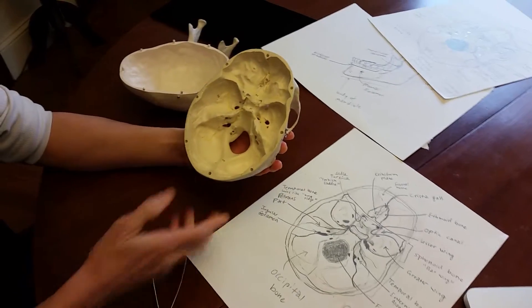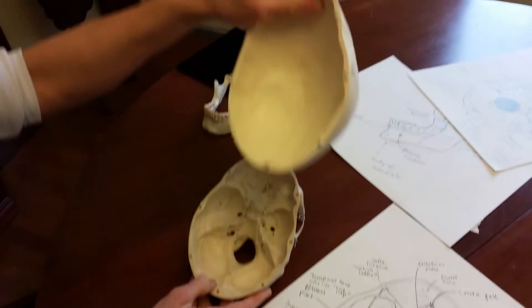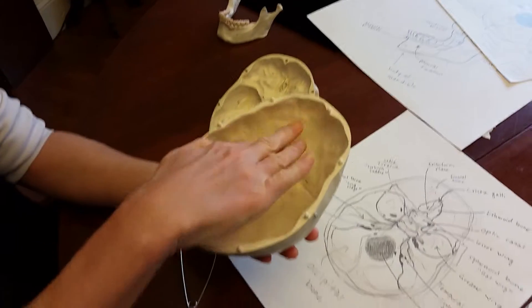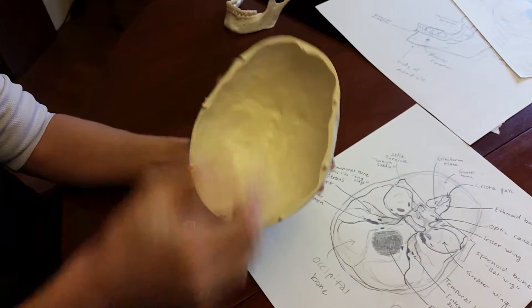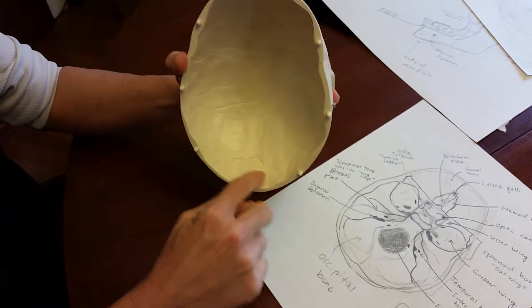Inside of the skull. I removed the top and want to show you the top first. You can see the interior part of the frontal bone, as well as the two parietal bones and part of the occipital bone here.